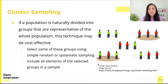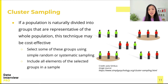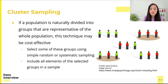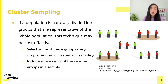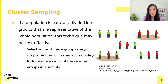If your population is naturally divided into groups that are representative of the whole population, then it may be more cost effective to select some of these groups using simple random sampling or systematic sampling, and include all of the elements and individuals of the selected groups in our sample. This is cluster sampling.